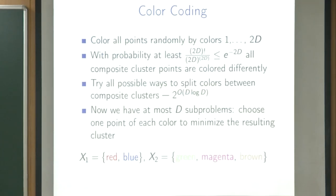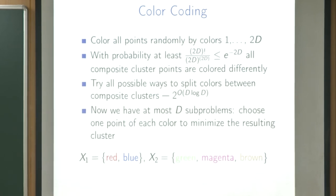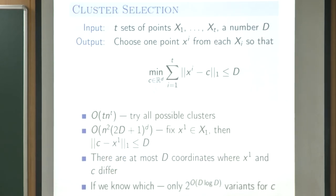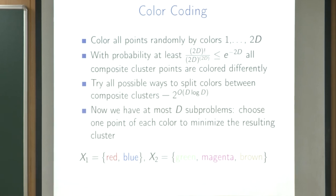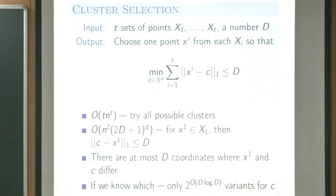The idea is: if we can solve this auxiliary cluster-selection problem, we can solve the original problem. Whenever we have some coloring and brute-force a partition of colors, to identify cluster x1 we just solve cluster selection on all the red and all the blue points — all red points form one set, all blue points another, and our task is to select one red and one blue point such that the cluster has small cost.